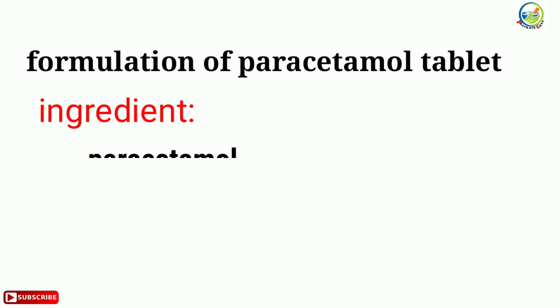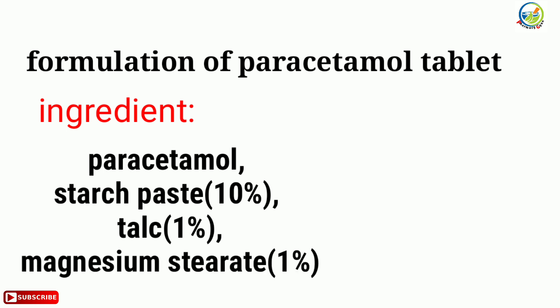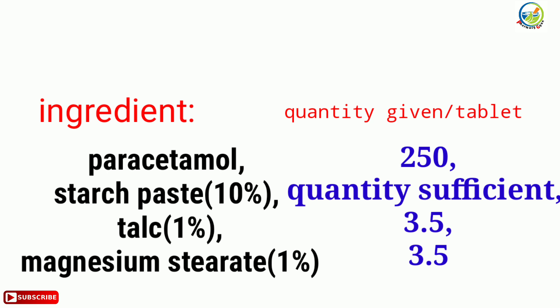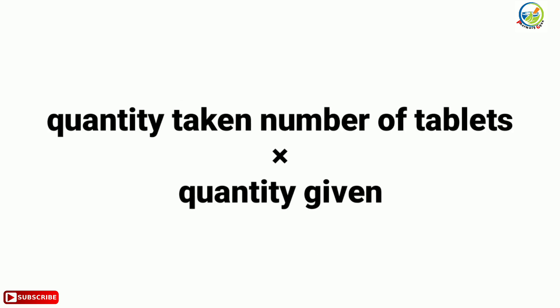First we will discuss the formulation of paracetamol tablets. The ingredients are: paracetamol, starch paste 10%, talc 1%, and magnesium stearate 1%. The quantities given are paracetamol 250 mg, starch paste in quantity sufficient, talc 3.5 mg, and magnesium stearate 3.5 mg. The quantity taken is the number of tablets multiplied by the quantity given.